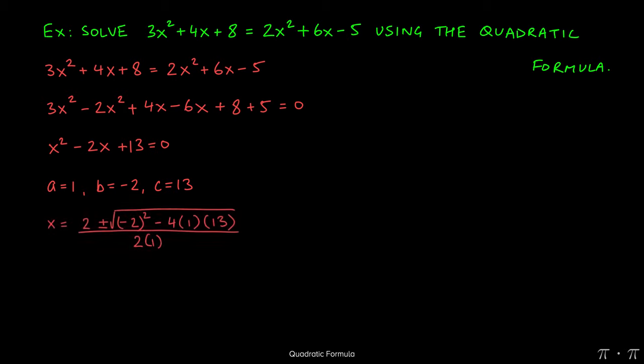Now all we have to do is replace all the variables in the quadratic formula with these constants a, b, and c. We start with negative b, but b is already negative, so negative times a negative will make it a positive 2, plus or minus the square root of b squared. b is negative 2, so we get negative 2 squared plus 4 times a, which is 1, times c, which is 13, all over 2 times a, which is still 1.